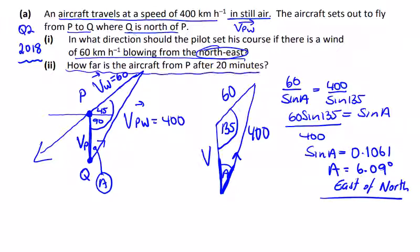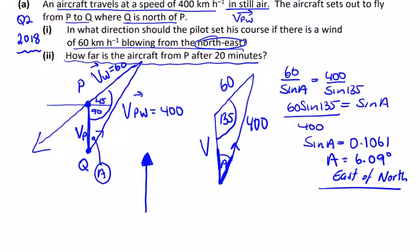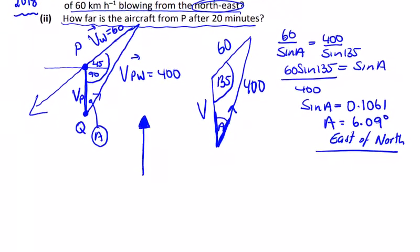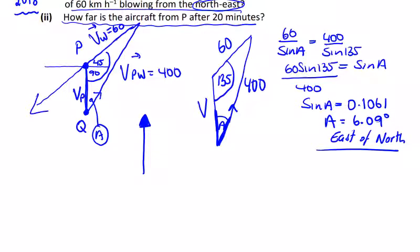Part two: how far is the aircraft from P after 20 minutes? The aircraft is going in this direction, being slowed down by the wind, but because it's at an angle it's staying in a straight line. We need to get the velocity of the plane here. We have all the variables, so we can get this angle up here, B.